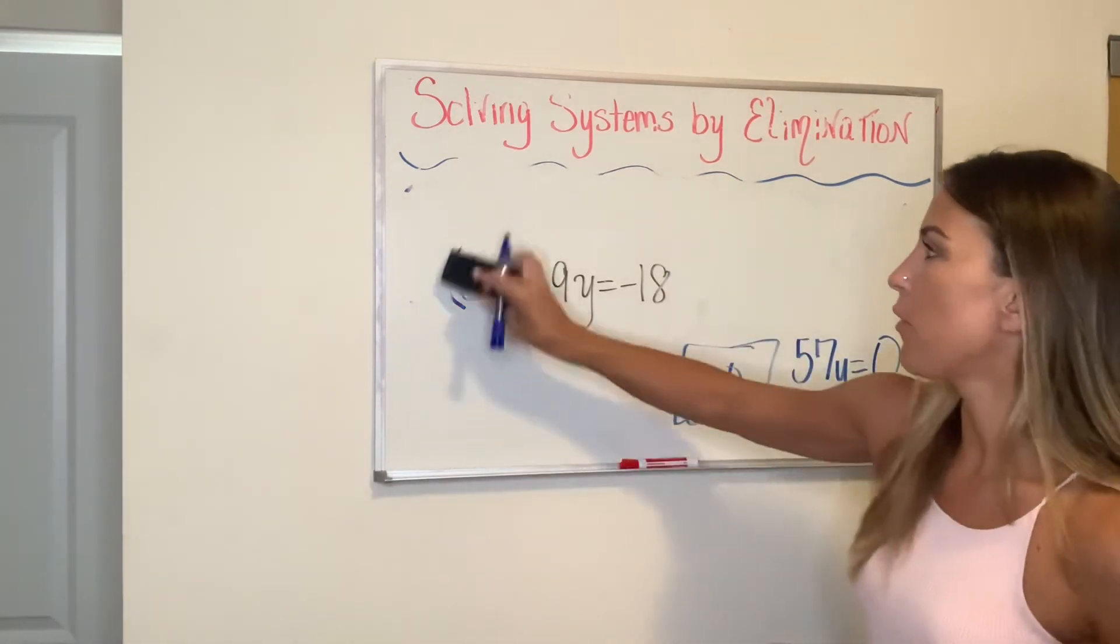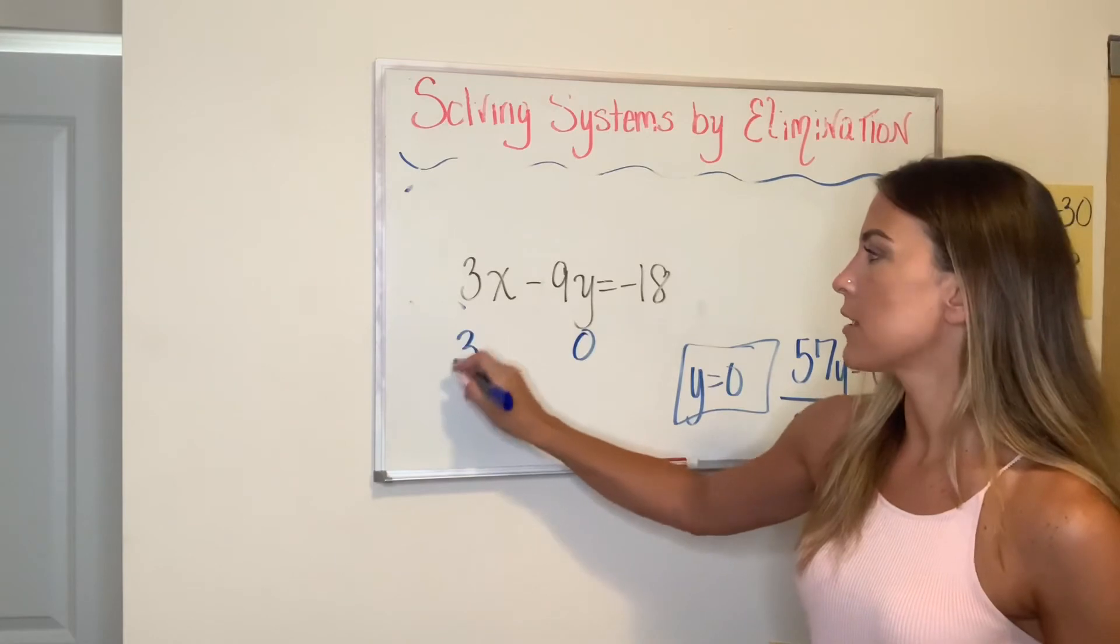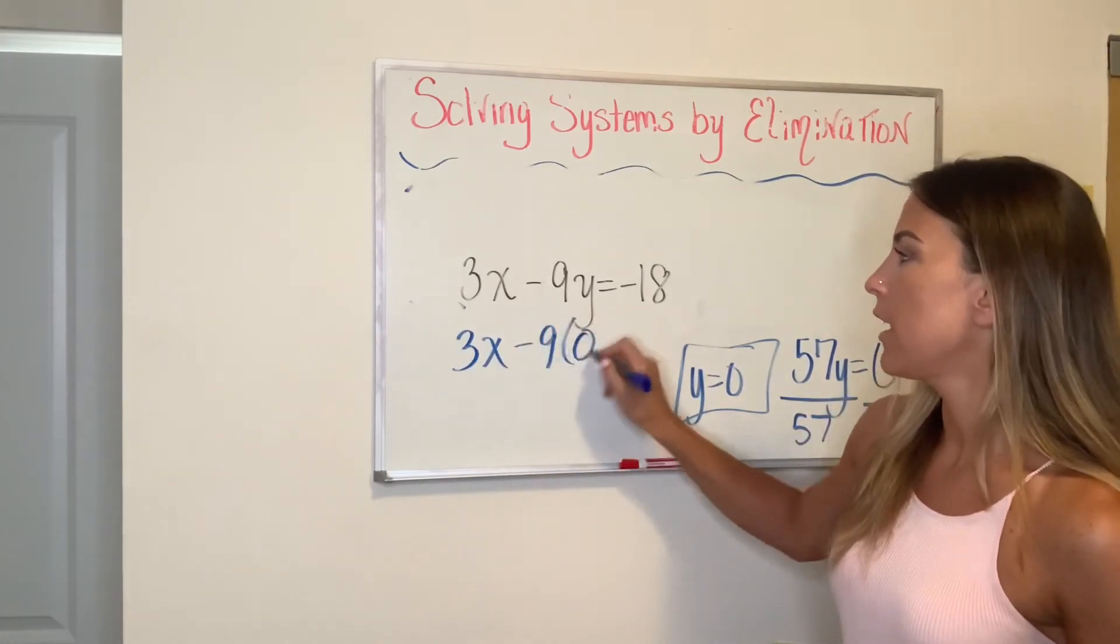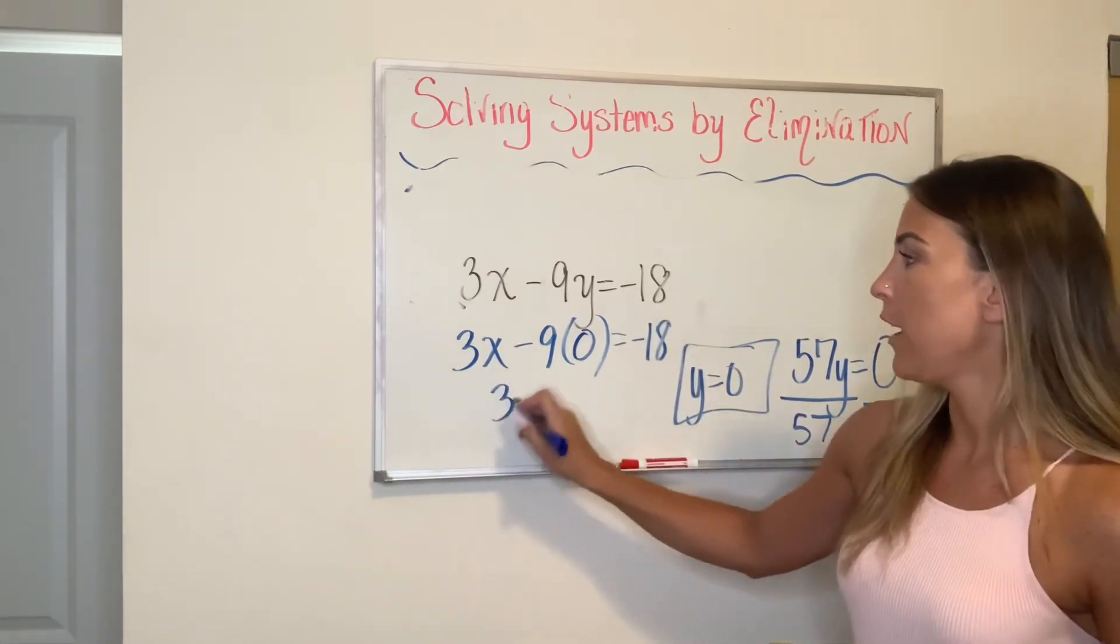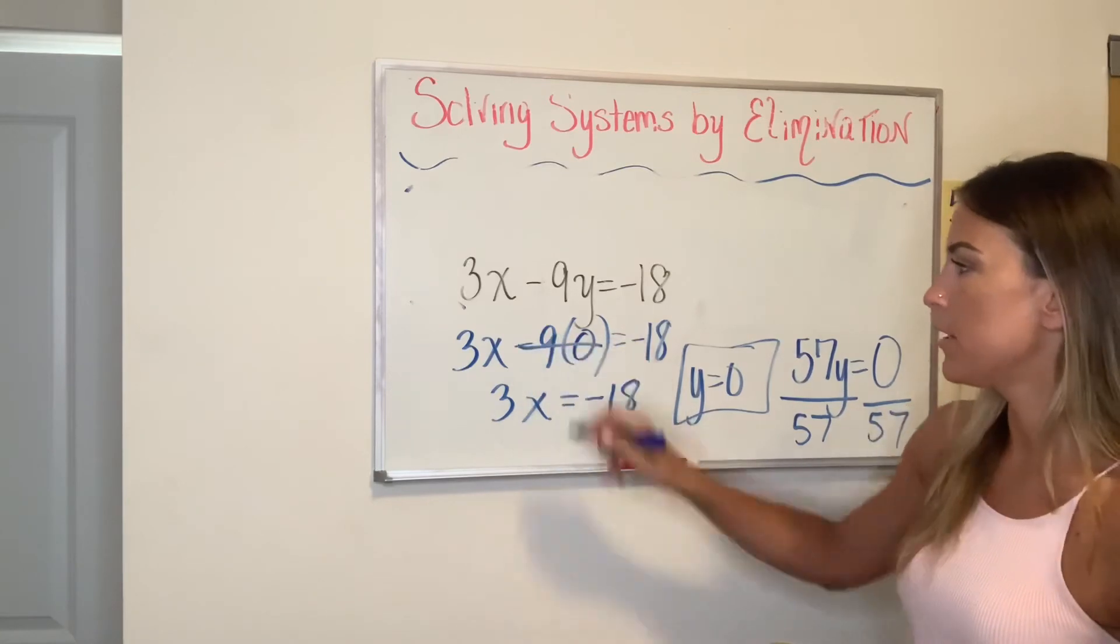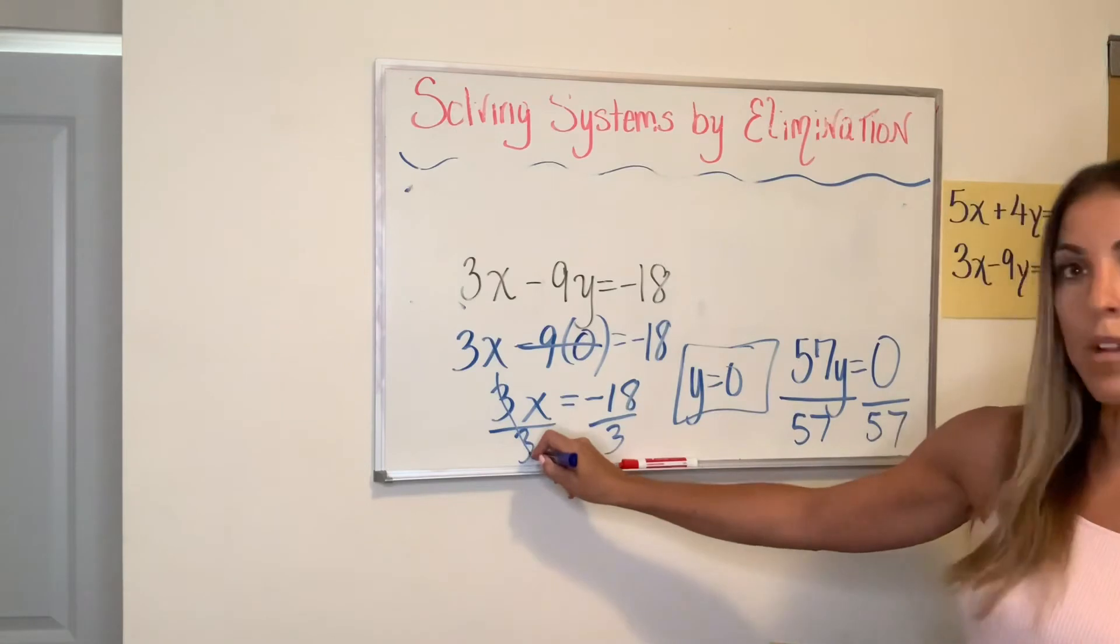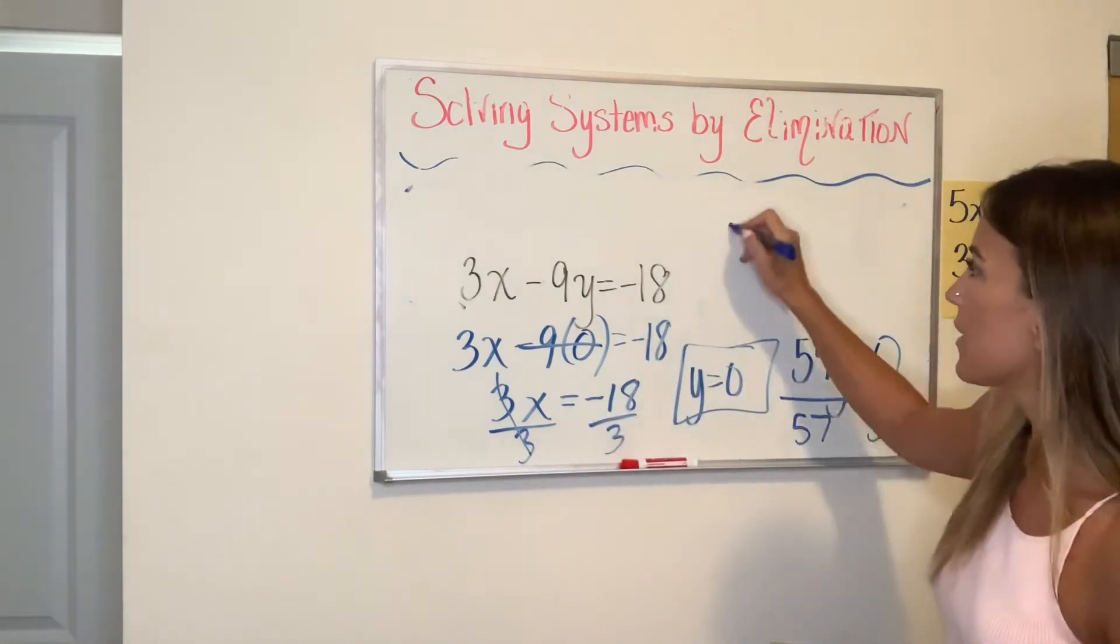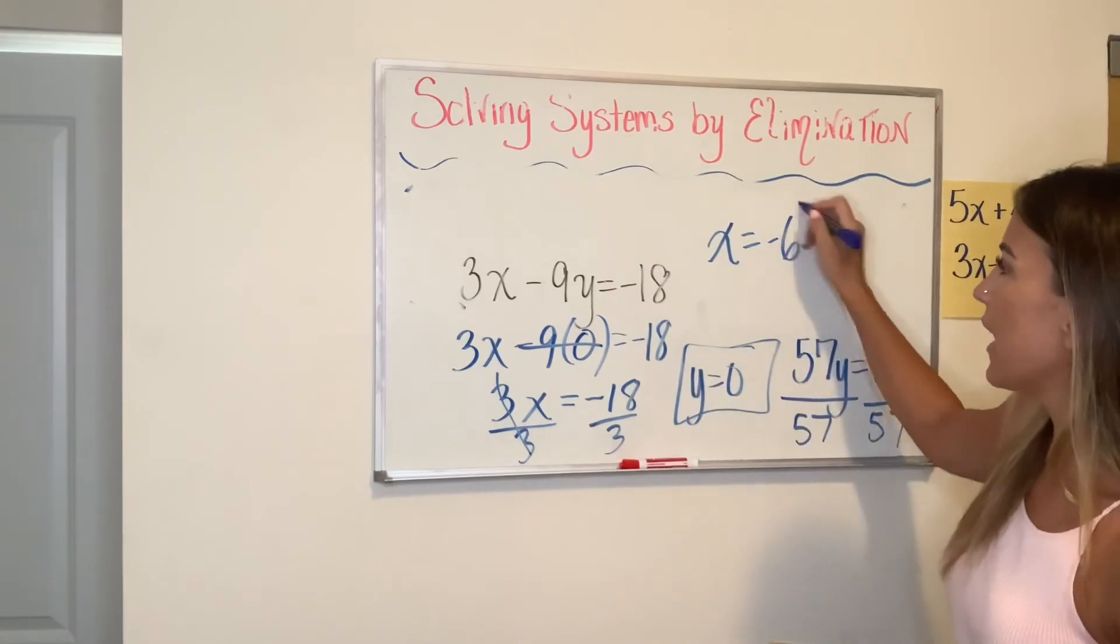So instead of writing Y now, I'm going to write zero here. Everything else is going to come down as is. So 3X minus nine times zero is negative 18. 3X equals negative 18 because negative nine times zero is zero. And then I'm going to divide by three on both sides. Three divided by three is one. So it cancels out and I get X equals negative 18 divided by three is negative six.